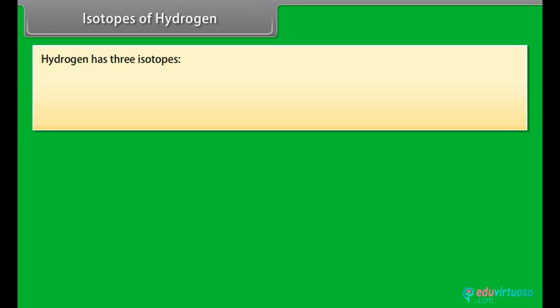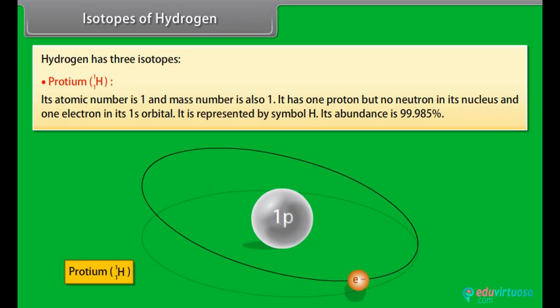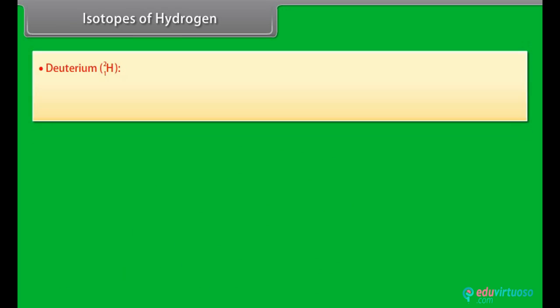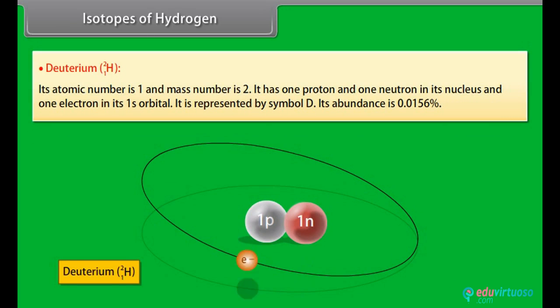Isotopes of Hydrogen. Hydrogen has three isotopes. Proteum: Its atomic number is 1 and mass number is also 1. It has one proton but no neutron in its nucleus and one electron in its 1s orbital. It is represented by symbol H. Its abundance is 99.985%. Deuterium: Its atomic number is 1 and mass number is 2. It has one proton and one neutron in its nucleus and one electron in its 1s orbital. It is represented by symbol D.